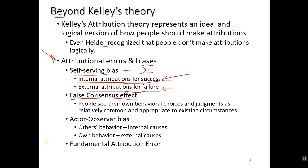The false consensus effect — note the word consensus from Kelly's theory — is when people see their own behavioral choices and judgments as relatively common and appropriate, erroneously seeing what they do as consensual, that is, supported and agreed upon by others when it really is not. For example, if you support Alexandria Ocasio-Cortez, you're going to overestimate the number of your peers who also say yes. That's the false consensus effect.